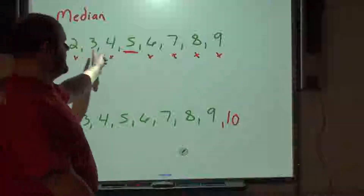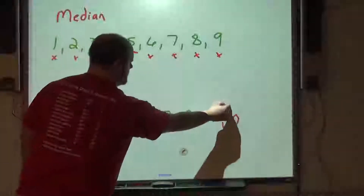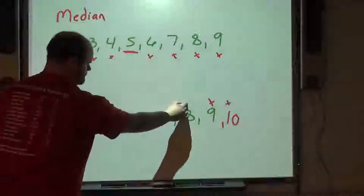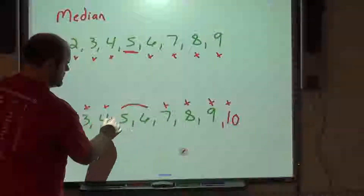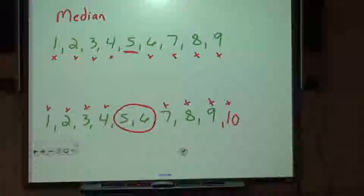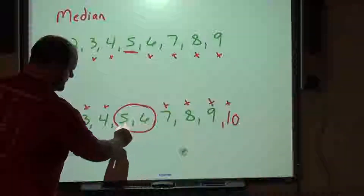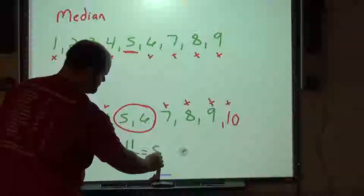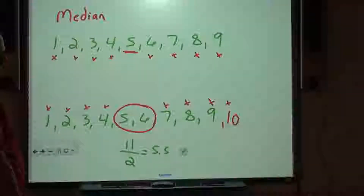I had an odd number of digits — 9 digits. What happens when I add a tenth digit, say the number 10? If I start crossing things off on both ends, I don't have a single middle term — I have two terms left. What you're going to do is find the mean of those two terms: 5 plus 6 equals 11, divided by 2. Your median is now 5.5. It doesn't have to be a number given to you. If you have an even number of terms, add the two middle terms and divide by 2.